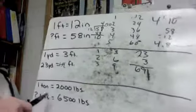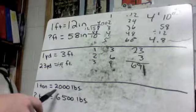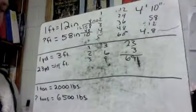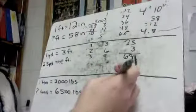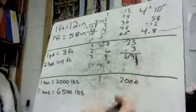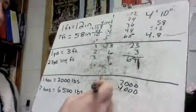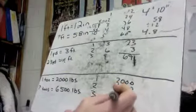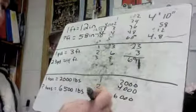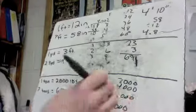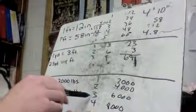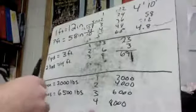The bottom one down here, one ton equals 2,000 pounds. So for every one ton, we've got 2,000 pounds, which would mean that two tons is going to be 4,000 pounds. Three tons is going to be 6,000 pounds. Four tons is going to be 8,000 pounds. So we know that we're going to be just above three tons. That's what our answer is going to be.